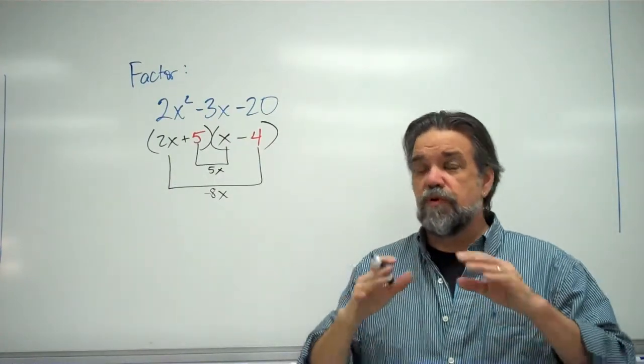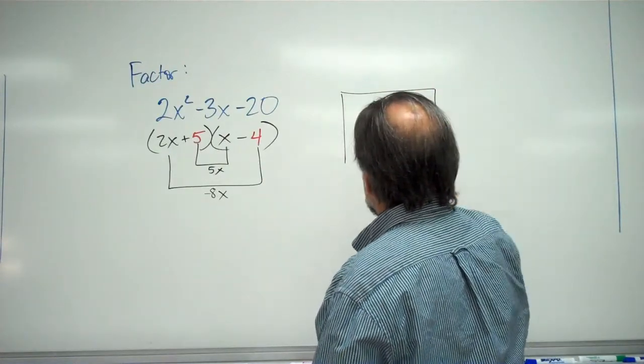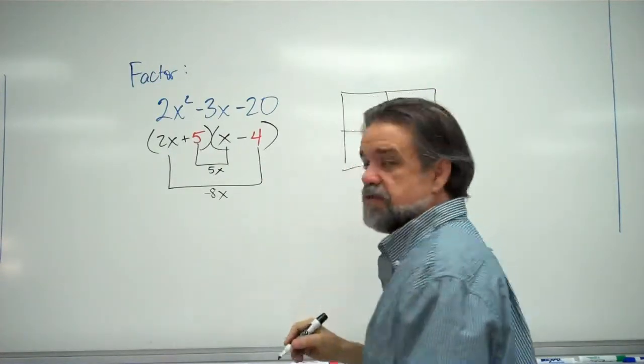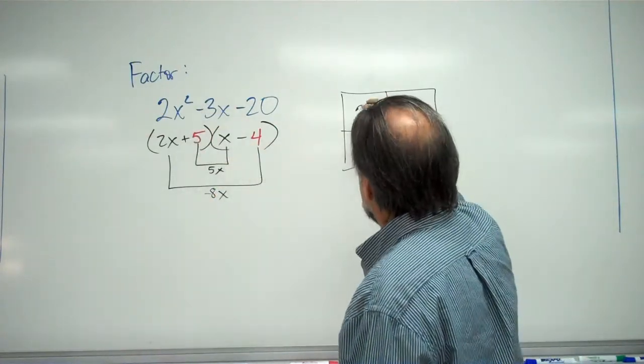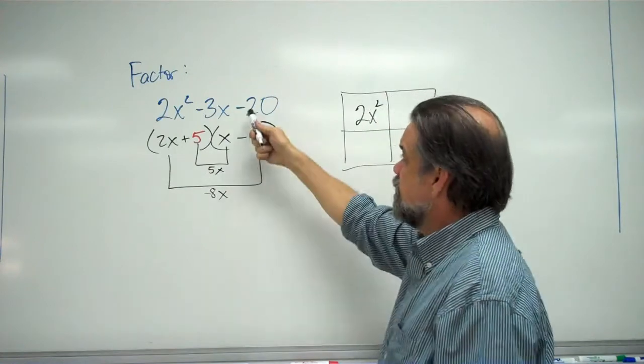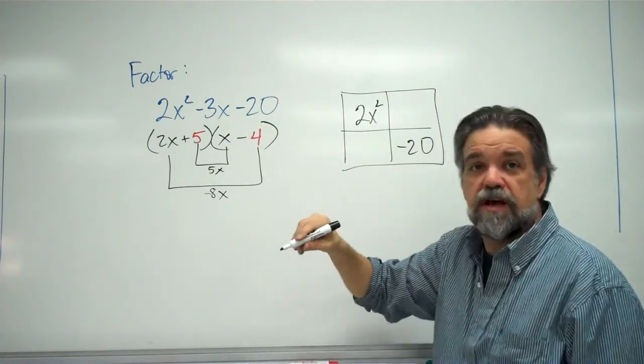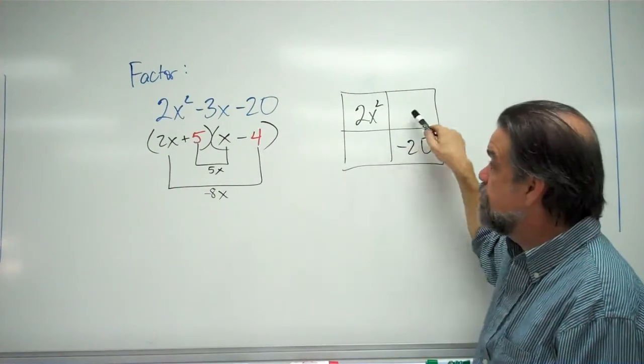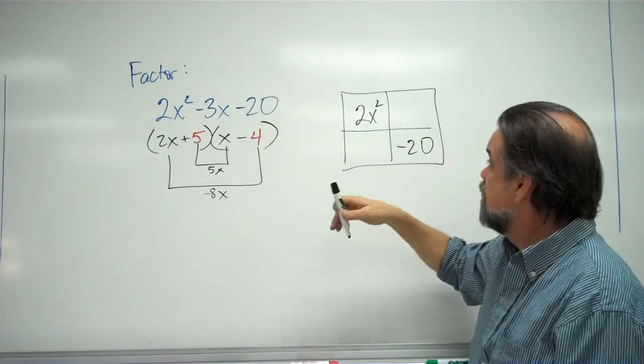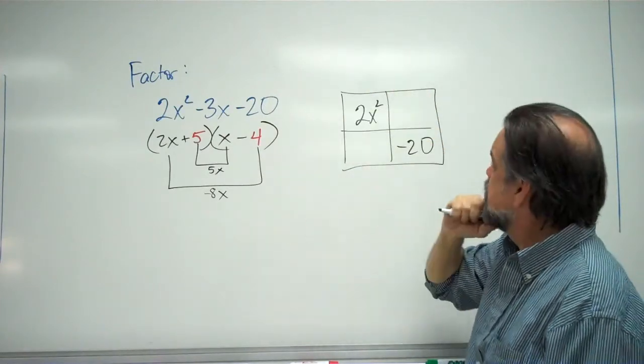Remember how when we're multiplying binomials, sometimes we'll make a little box here? Well, let's make that box and let's go backwards. So the 2x squared, I know where that goes. That goes here. The negative 20, I know where that goes. That goes here. So now all I need to do is I need to figure out what goes in these two boxes that gets combined to make the negative 3x. And then figure out what's going to go along the sides, and those are going to be my factors.